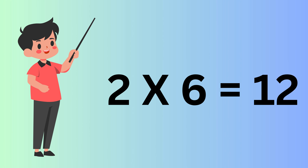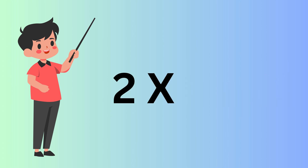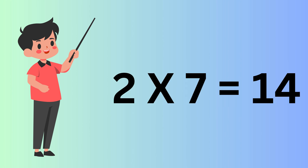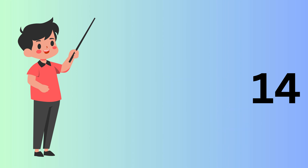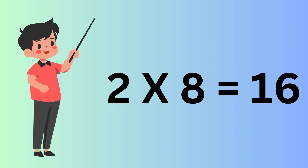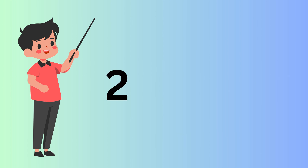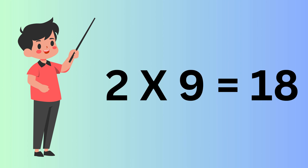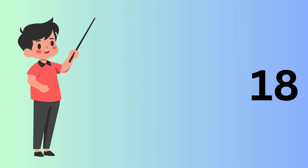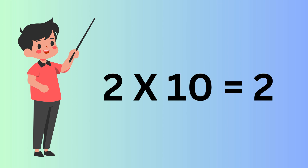Two Sixes are Twelve. Two Sevens are Fourteen. Two Eights are Sixteen. Two Nines are Eighteen. Two Tens are Twenty.